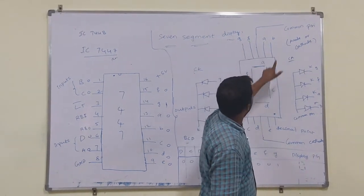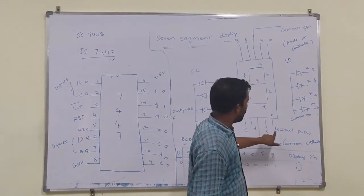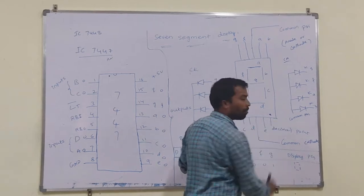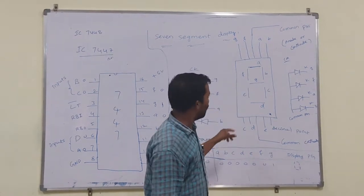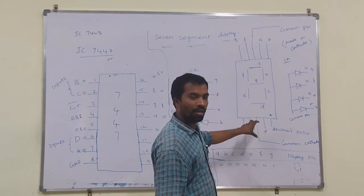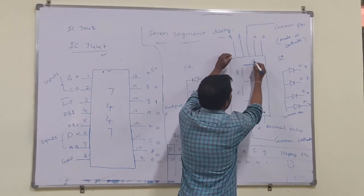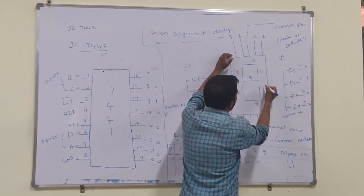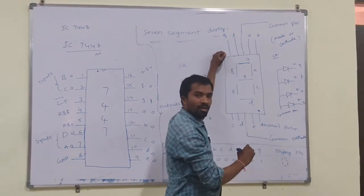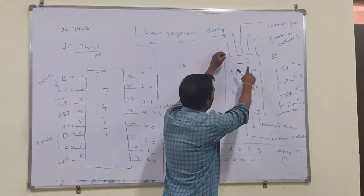The pins are G, F, A, B, C, D, E, and decimal point. This is the decimal point — those are the pins. On the top view, the segments are labeled A, B, C, D, E, F, G.